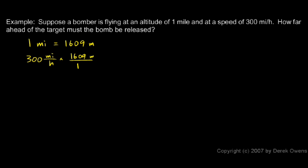I know that there's 1,609 meters in one mile. So the miles will cancel out. And I know that one hour is 3,600 seconds. So the hours cancel out. And I'm left with meters per second. And when I do the math here, 300 times 1,609 divided by 3,600 is 134 meters per second.